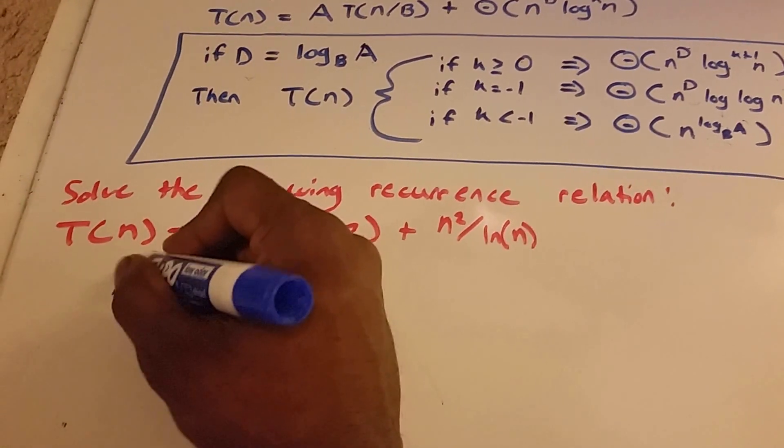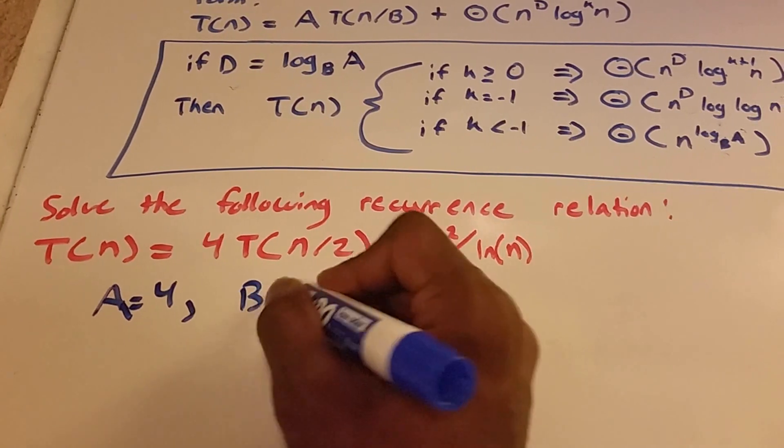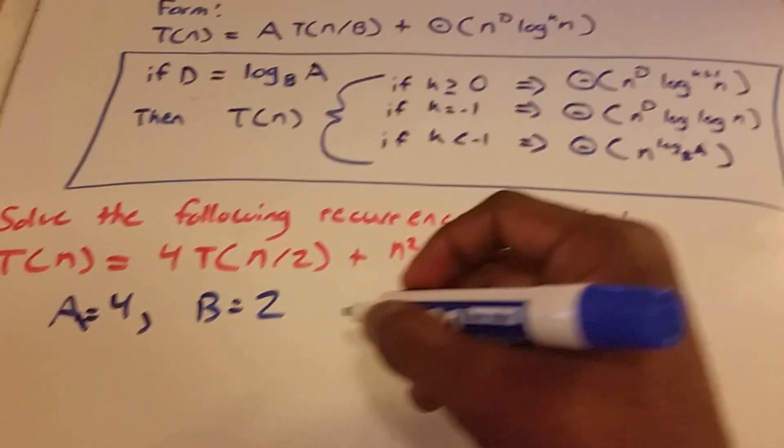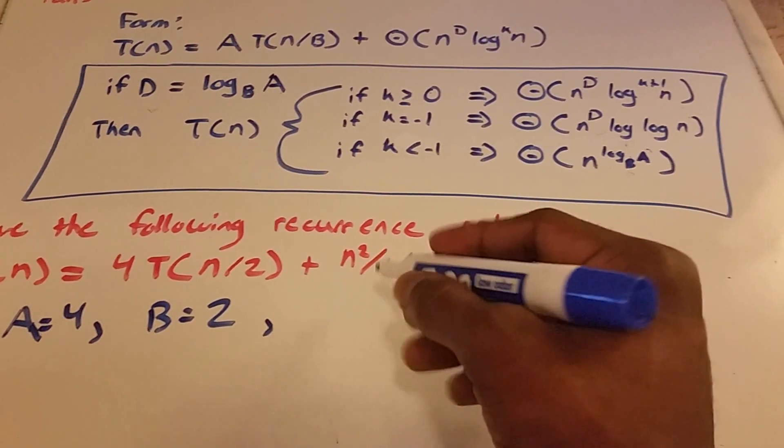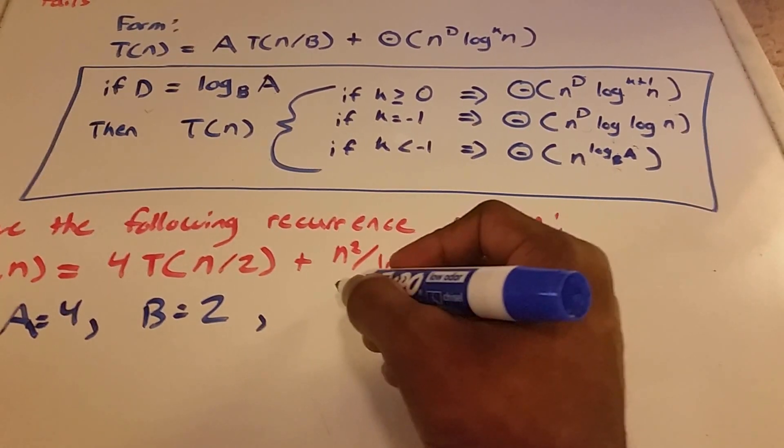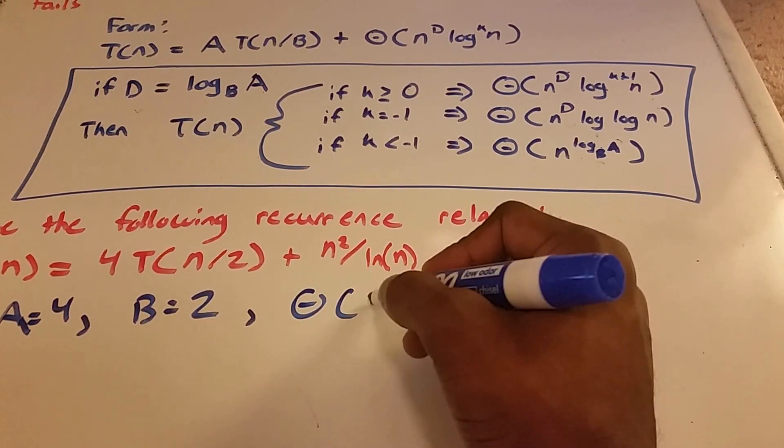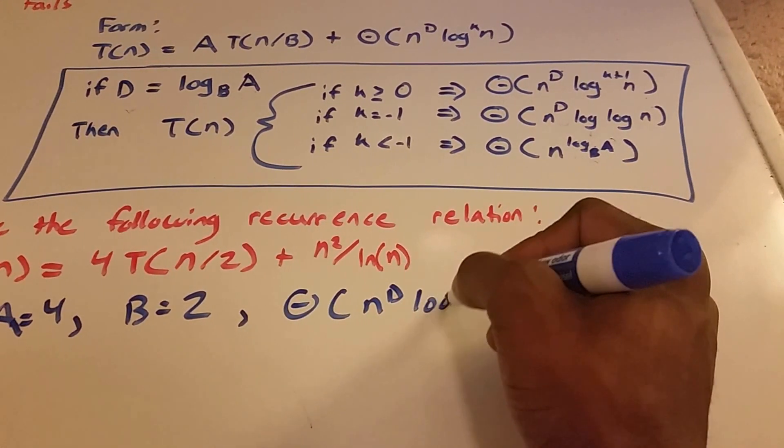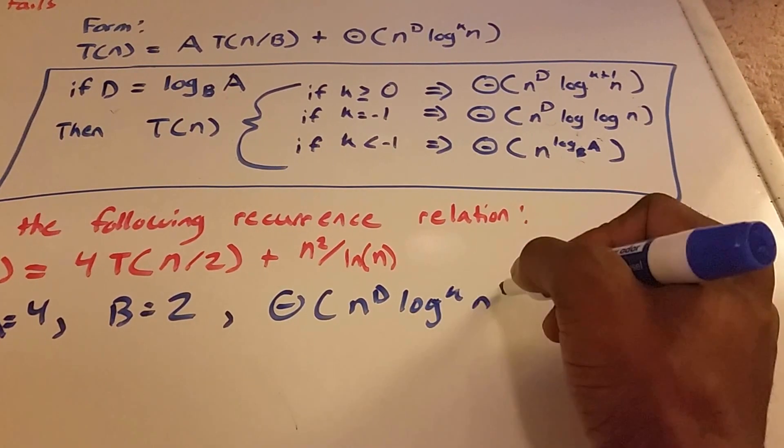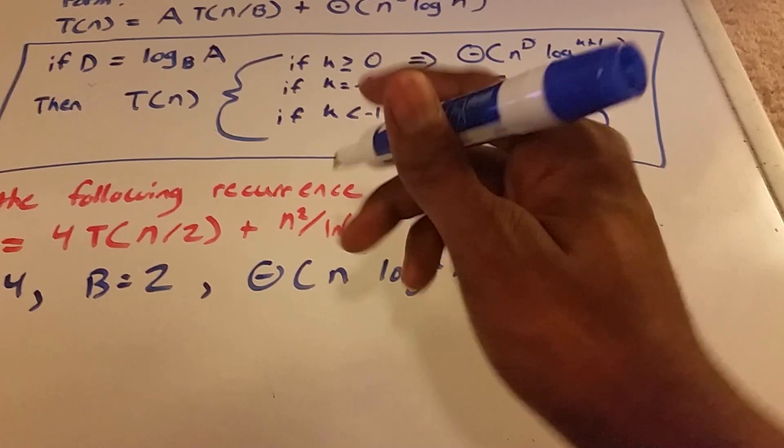So our A is equal to 4, our B is equal to 2, and our equation here is our Θ of n^D·log_k(n). So our D value is 2.